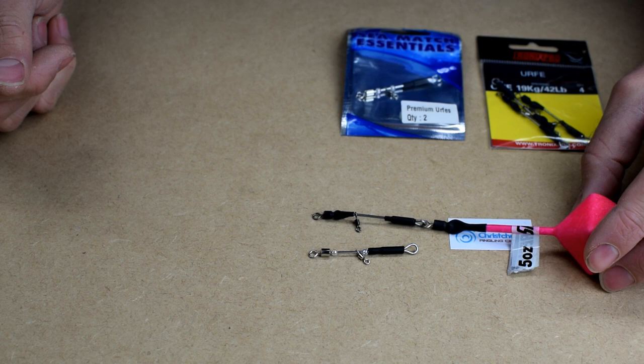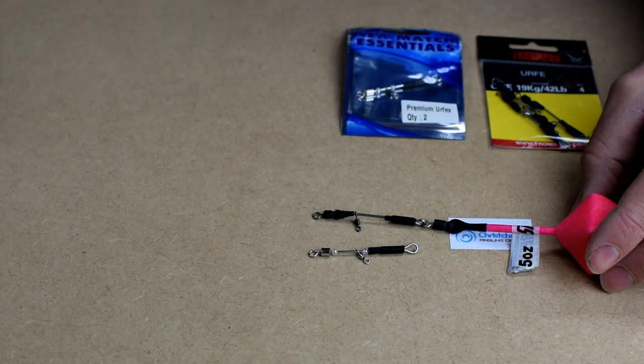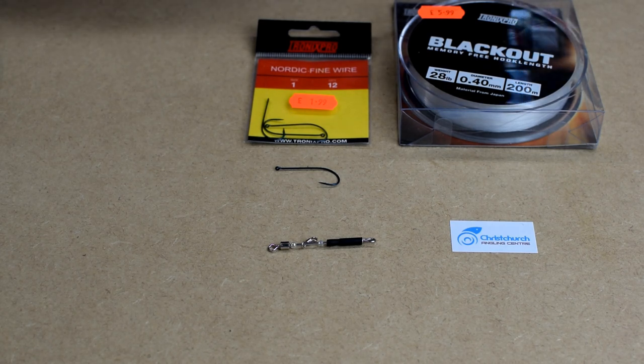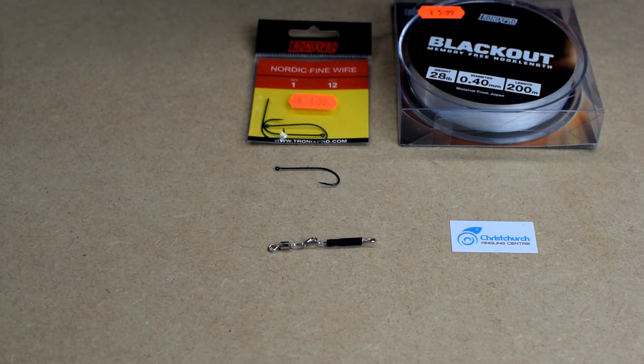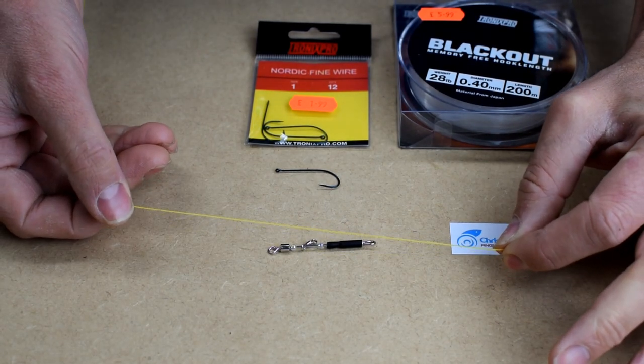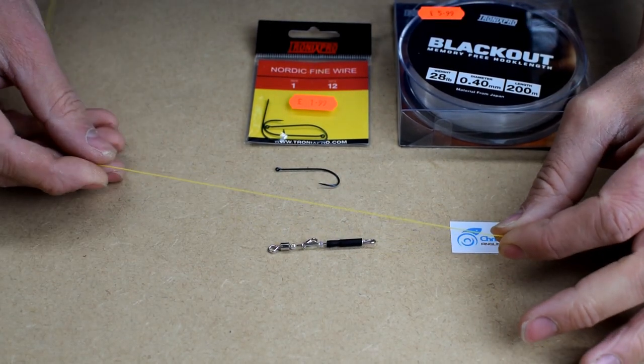Now what we need to do is attach a snood. Now let's add a snood to our earth. For this demonstration I'm going to use a bit of coloured line. I wouldn't normally use coloured line for my snoods, but hopefully it'll stand out a little bit better in the video.